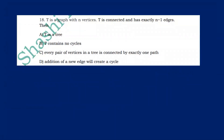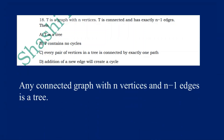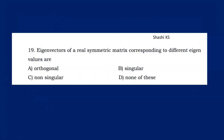T is a graph with N vertices. T is connected and has exactly N-1 edges — by theorem, T is a tree. So option A is the right answer. The eigenvectors of a real symmetric matrix corresponding to different eigenvalues are orthogonal.